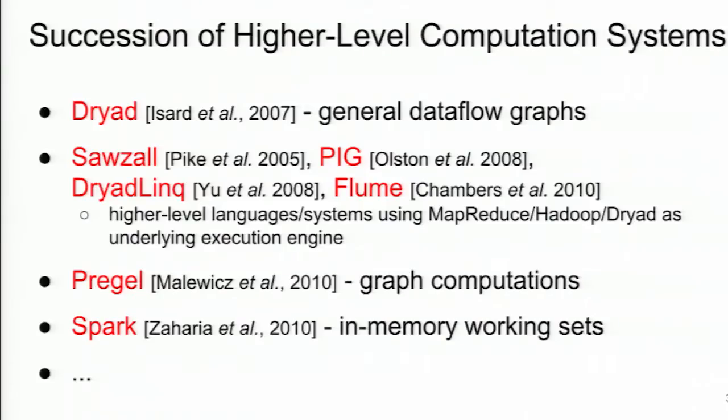There's been a succession of higher-level computation systems. Dryad generalized MapReduce to general data flow graphs. Sawzall, Pig, Dryad LINQ, and Flume all use a higher-level domain-specific language with MapReduce or Hadoop as the execution engine underneath. Pregel is specialized for graph algorithms — you write code for nodes and edges. Spark uses in-memory working sets, useful for iterative computations. Giving programmers a high-level view with flexible implementation mapping onto hardware is a lot better.